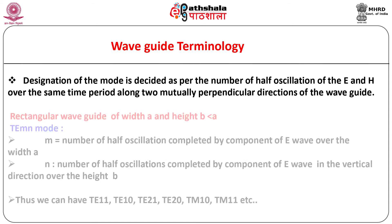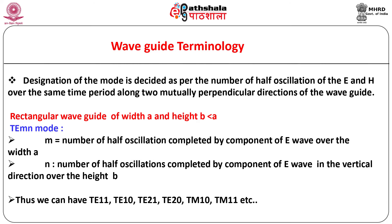In the case of a rectangular waveguide of width A and height B, if M is the number of half oscillations completed by the E or H wave component over the width A, and N is the number over the height B, then the corresponding mode is denoted by TE_MN or TM_MN respectively. Thus, we can have modes such as TE11, TE10, TE21, TE20, TM10, TM11, etc. Various modes described above are expected to propagate through the waveguide without attenuation.